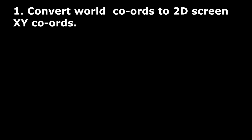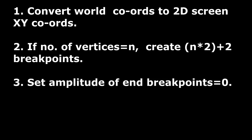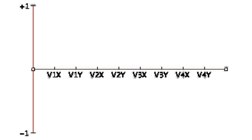There are various ways one could go about achieving this. But for Rotosound, my approach has been: first, convert the world coordinates of each of the vertices to screen XY pixel coordinates. Next, create a wavetable with a number of equally spaced breakpoints based on the number of vertices. For example, if the number of vertices is n, then the number of breakpoints is n times 2, plus 2. So for a tetrahedron with 4 vertices, our wavetable would have 10 breakpoints. The first and last breakpoints are anchor points with an amplitude of 0, so we can seamlessly transition from one wave shape to the next without clicks or audible discontinuities. Then we set the amplitude of all the other breakpoints to a scaled value between minus 1 and 1, from the X and Y screen coordinates of each of the vertices. So the amplitude of every pair of breakpoints is the scaled X coordinate followed by the scaled Y coordinate of a vertex, and in this way we use both coordinate values.